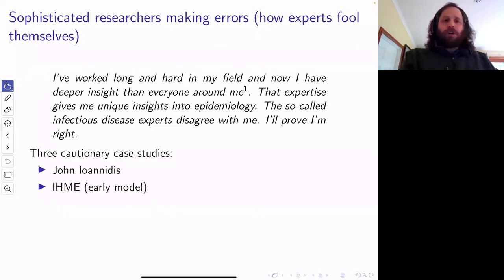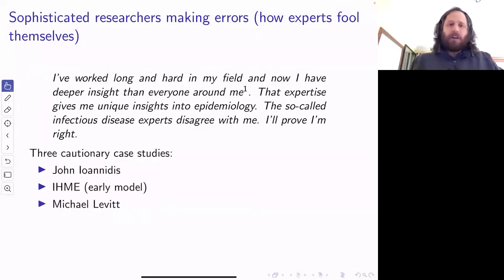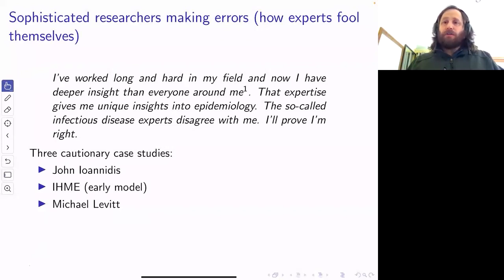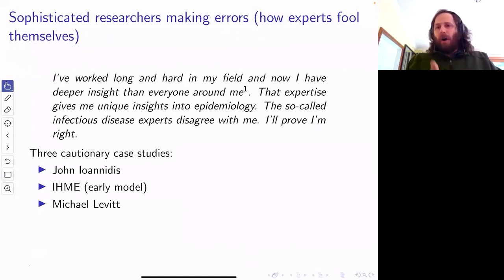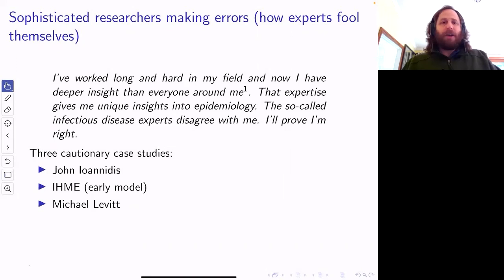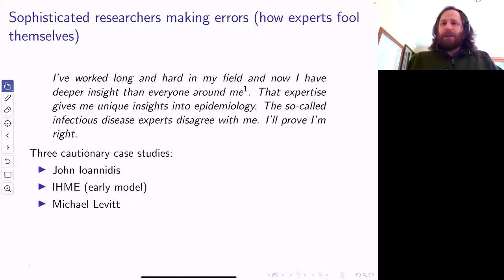I'm going to talk about these three people: John Ioannidis, the IHME — a group at the University of Washington — and Michael Levitt. John Ioannidis may be the most cited scientist ever. Michael Levitt has a Nobel prize. These are big names, serious scientists — they do good work. I would say the first three have undersold what I believe is going on with the pandemic. This fourth person has oversold it. This sort of misinformation is on both sides.